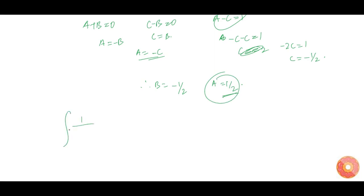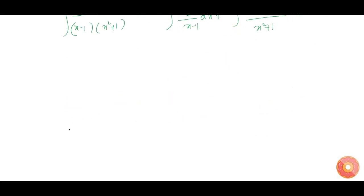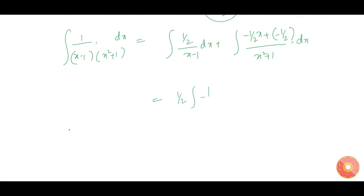Now, integration of 1 divided by (x minus 1) into (x squared plus 1) dx can be written as: A over (x minus 1), where A equals 1 by 2, giving us 1 by 2 times integration of 1 over (x minus 1) dx, plus integration of (Bx plus C) over (x squared plus 1) dx. B is minus 1 by 2 and C is also minus 1 by 2, so we have minus 1 by 2 times integration of (x plus 1) divided by (x squared plus 1) dx.